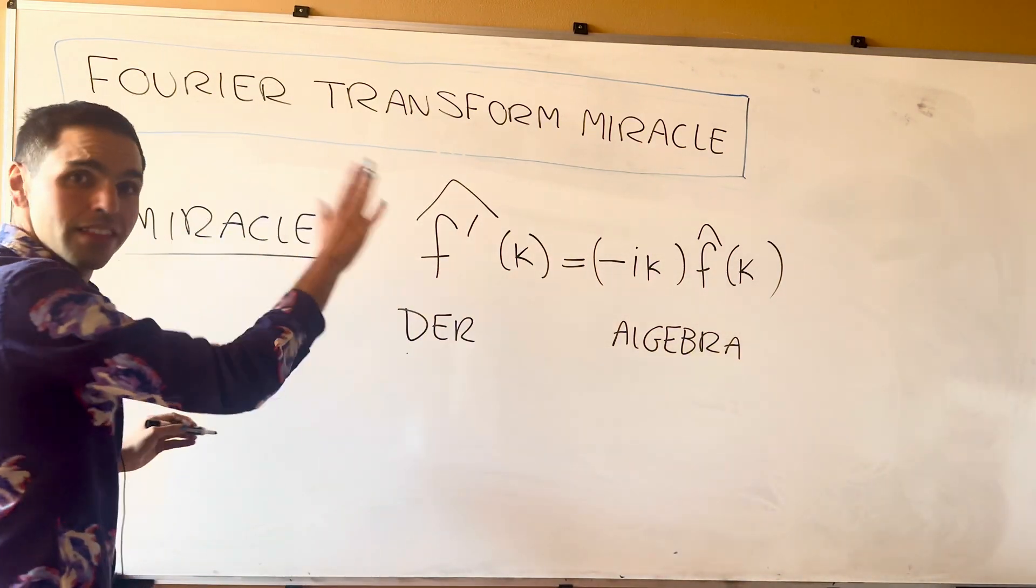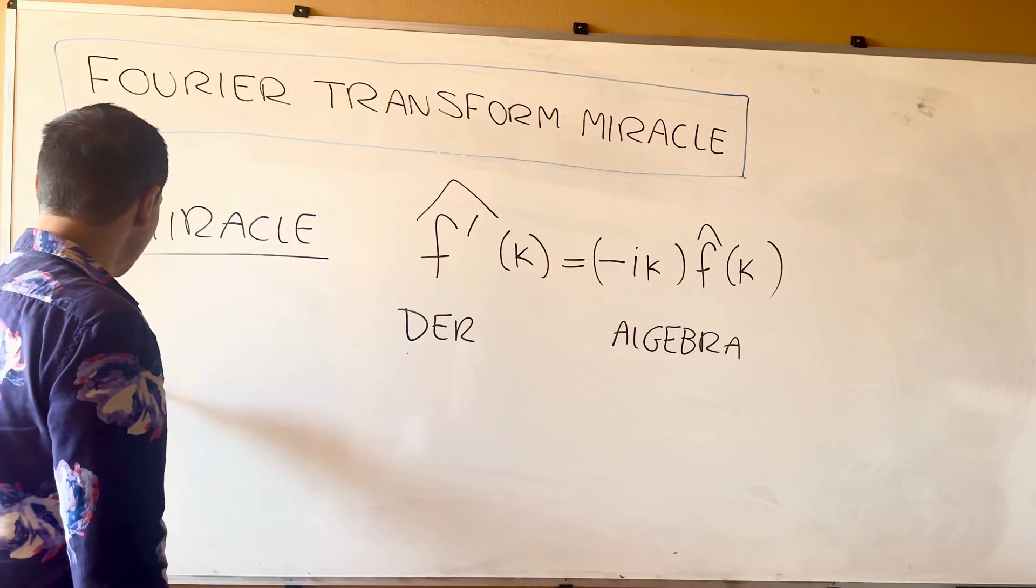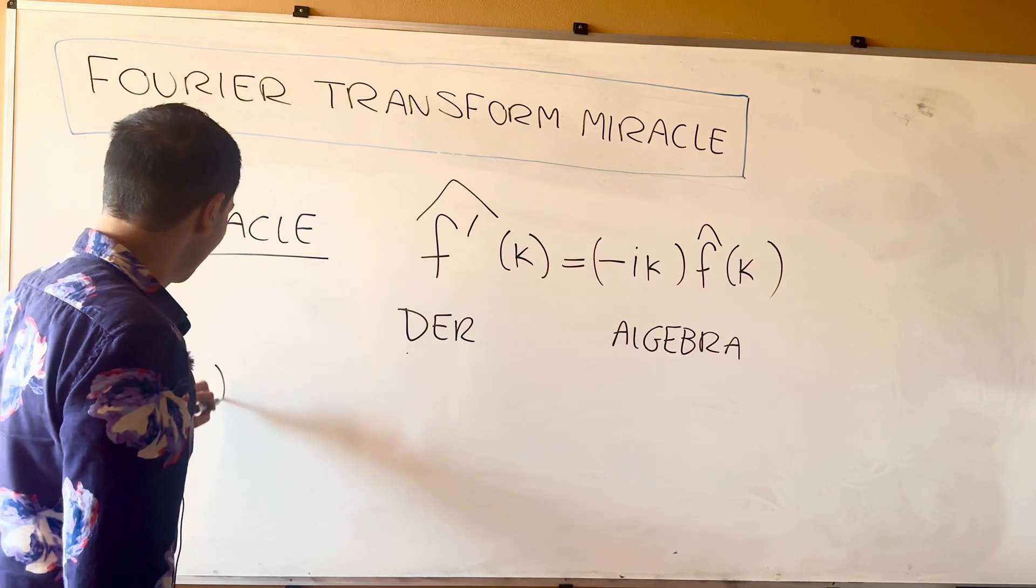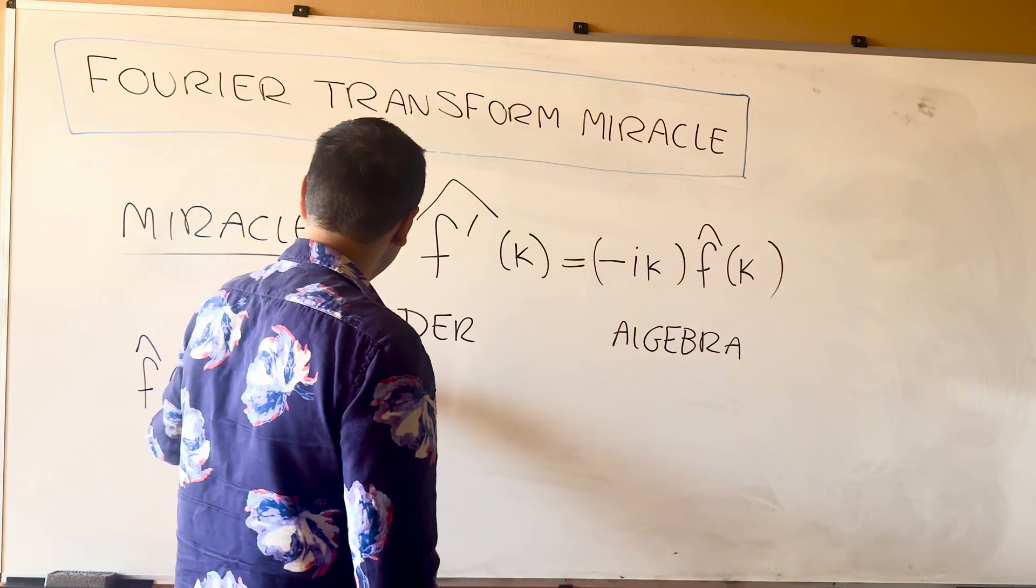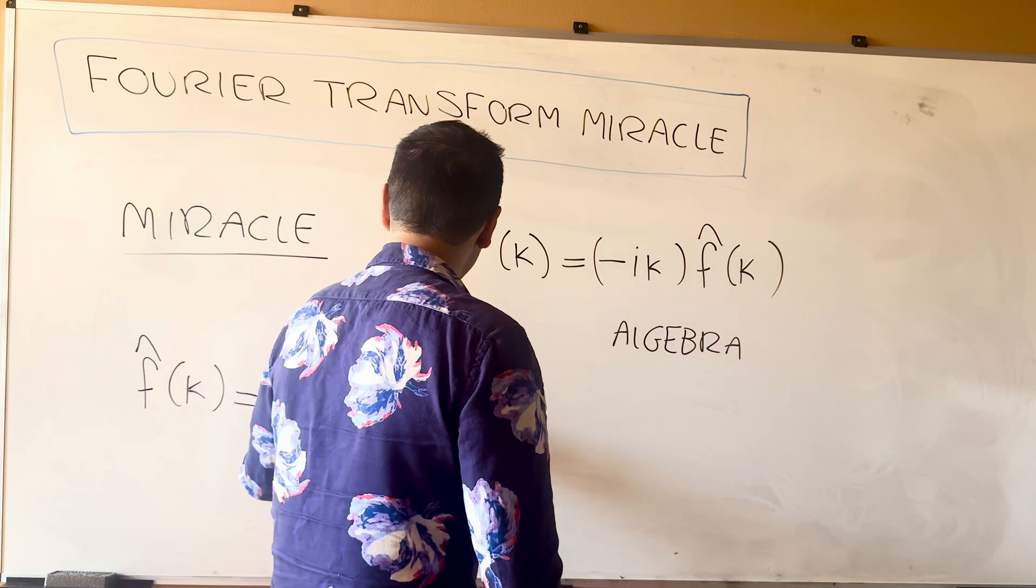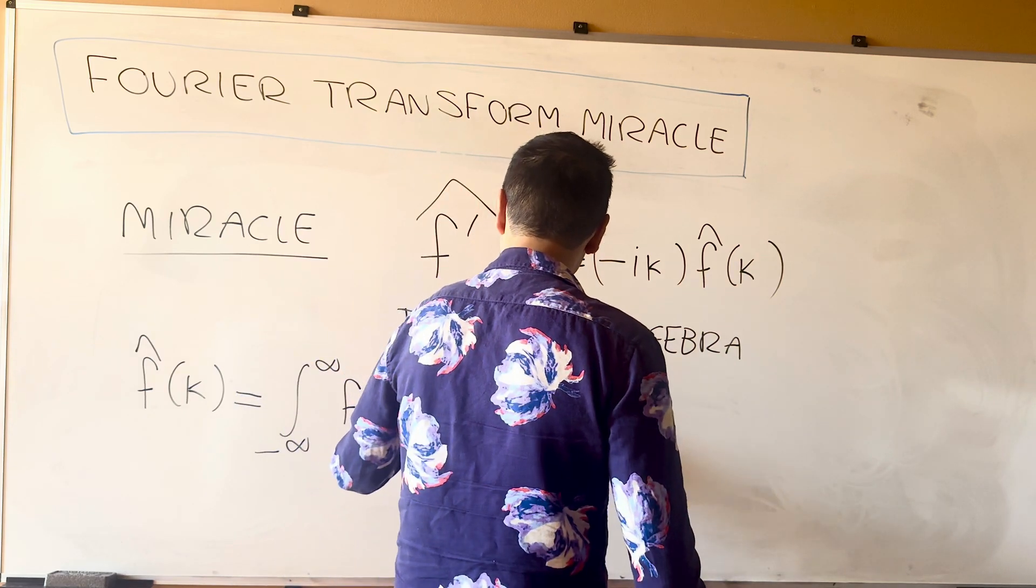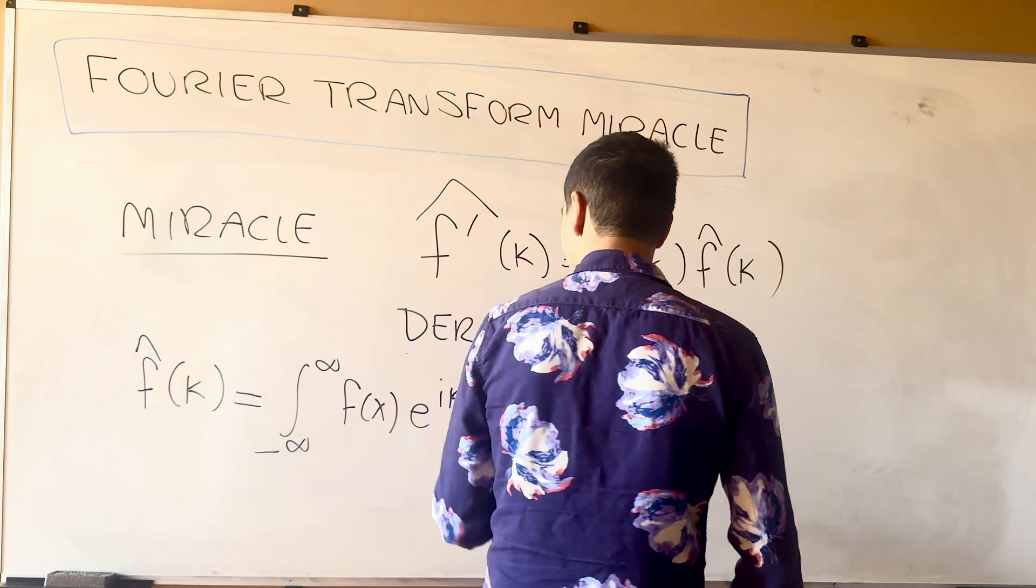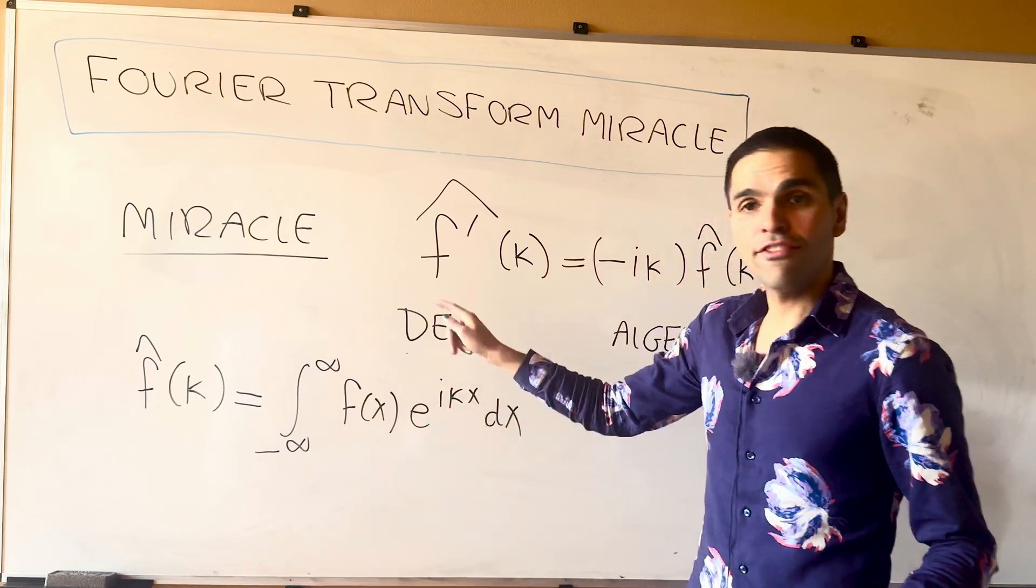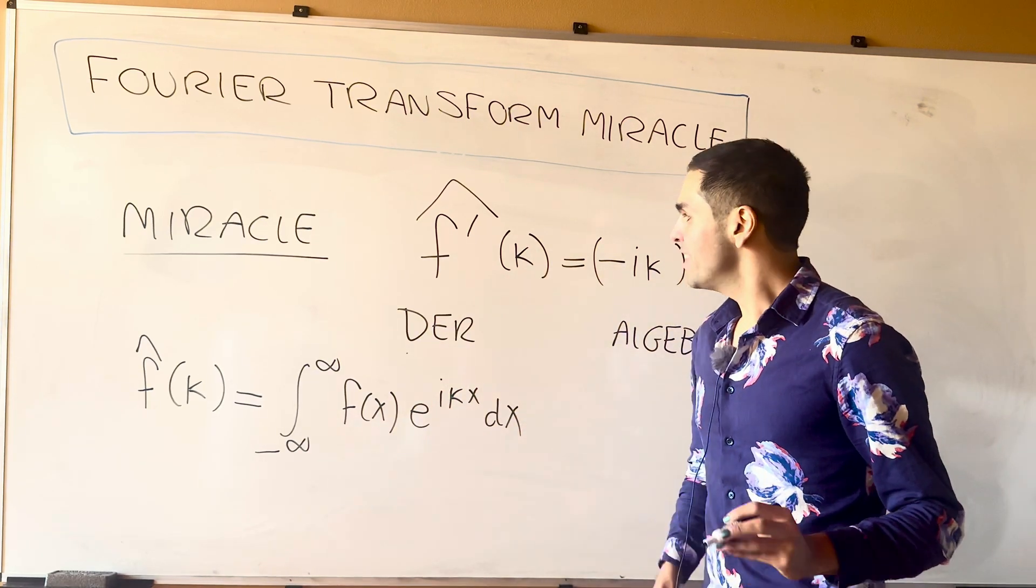And for this, let me just remind you what definition I used. Your f hat of kappa is just the integral from minus infinity to infinity of f of x, e to the i kappa x, dx. So we take the average of f with those squiggly functions, e to the i kappa x.